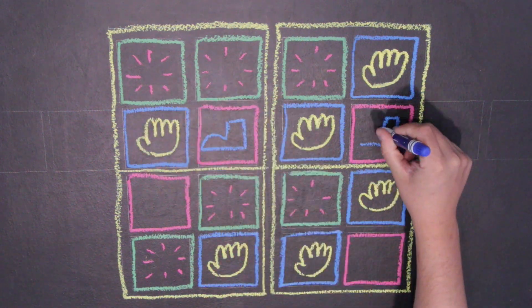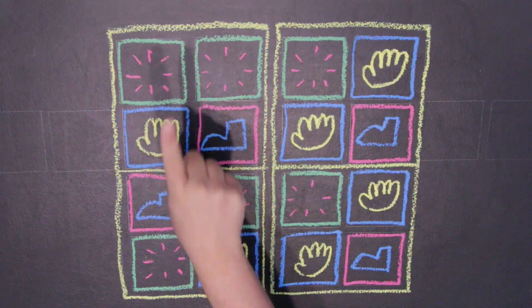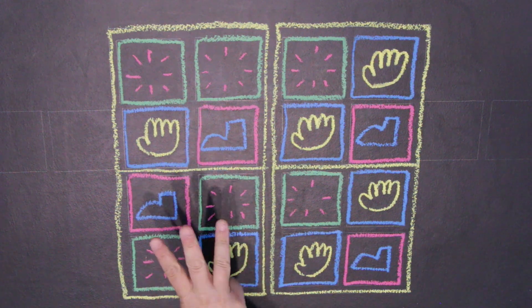Have each group perform its eight count composition for the class. Ask the students to describe their compositions.